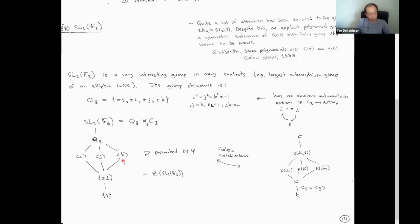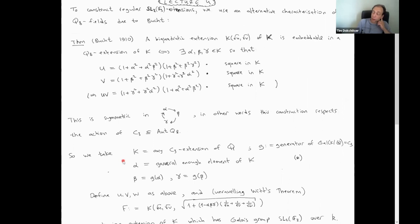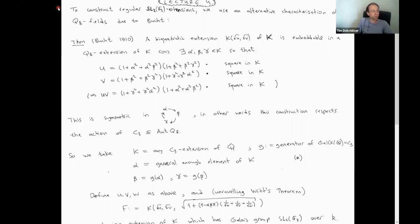We want a quaternion extension on which C3 acts as automorphisms by permuting i, j, and k cyclically. In theory we know everything about Q8 extensions via Witt's theorem, but there is a slightly different characterization — a theorem of Brauer from 1910, essentially equivalent to Witt's result. He proves the following: if you have a biquadratic extension of some field K and ask whether you can embed it into a quaternion extension.